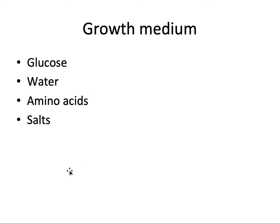To grow a cell we need growth media, and this growth media has glucose, water, amino acids, salts, and other essential materials that may vary based on the cell type you want to culture.